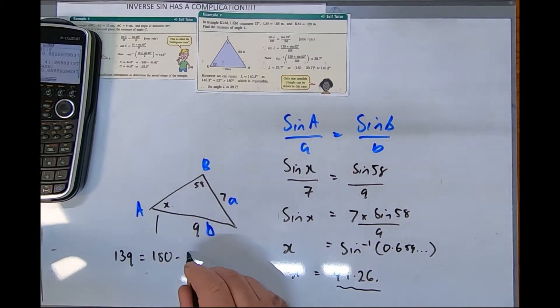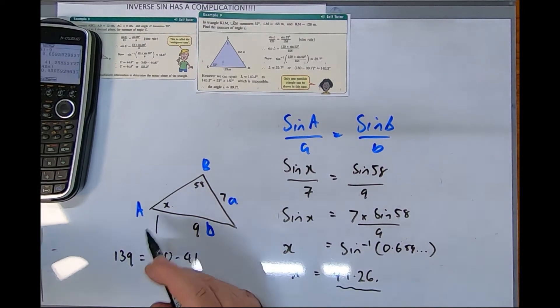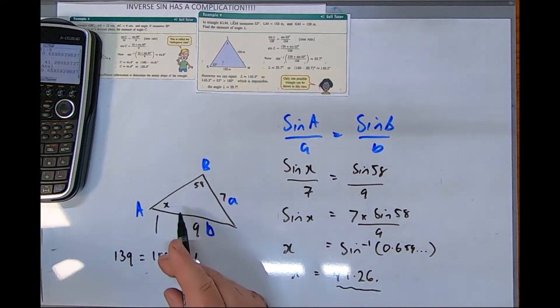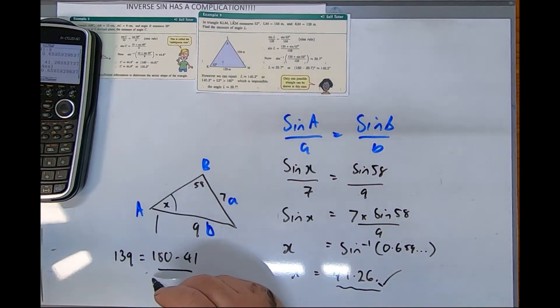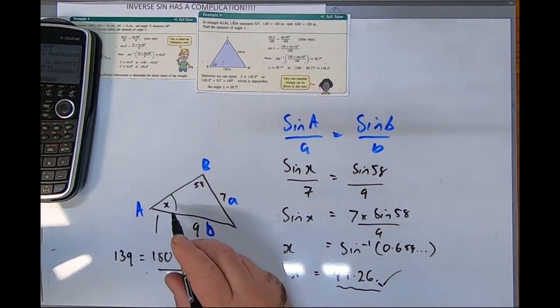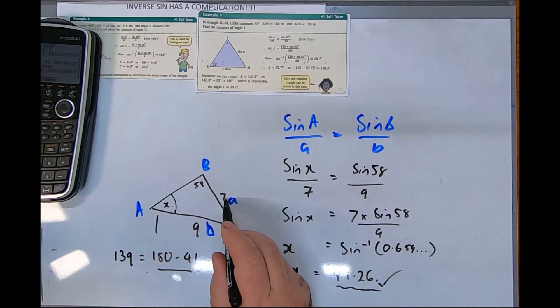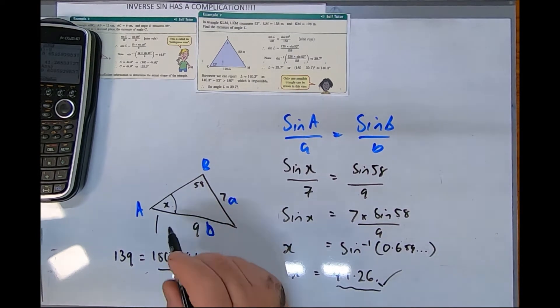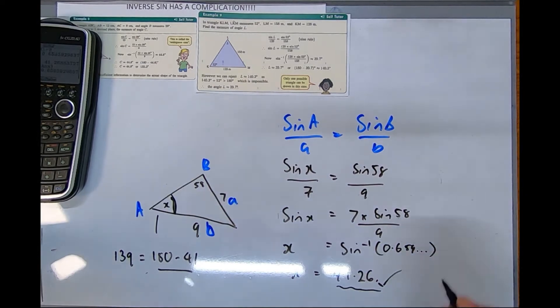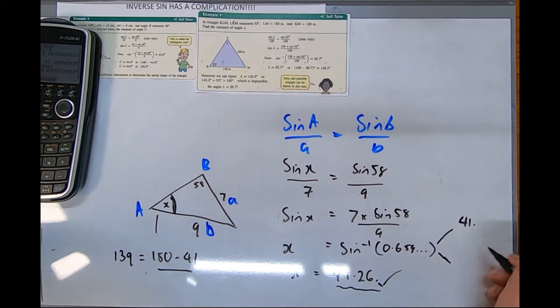That equals 180 take 41. For this picture we can see we've been given a diagram and it doesn't look like it could be 140. It looks like it should be just 40. Also, this side is 7, so if this was 140, the 7 would have to be bigger than the 9. From this picture it's pretty clear this has got to be 41.